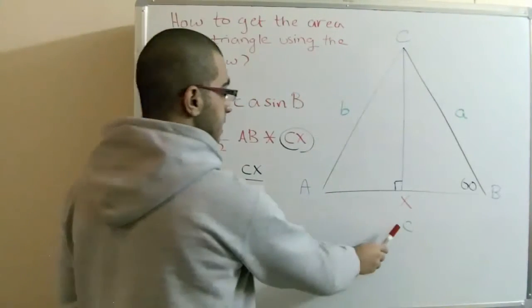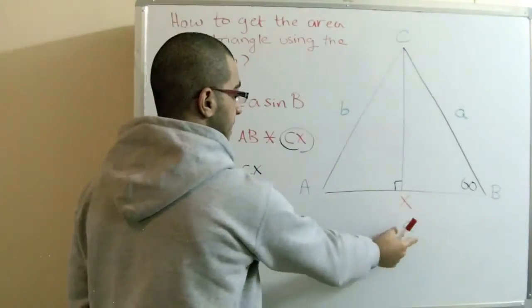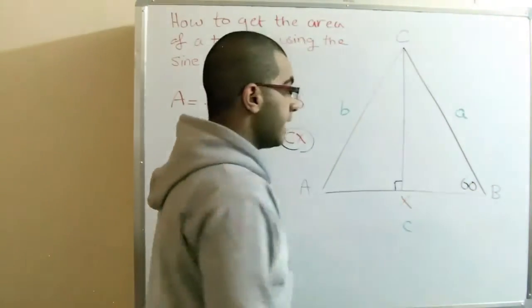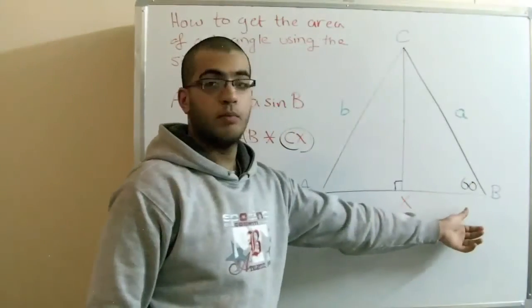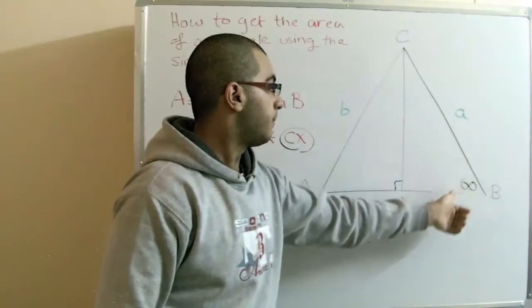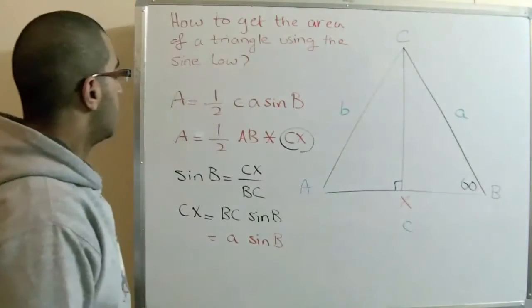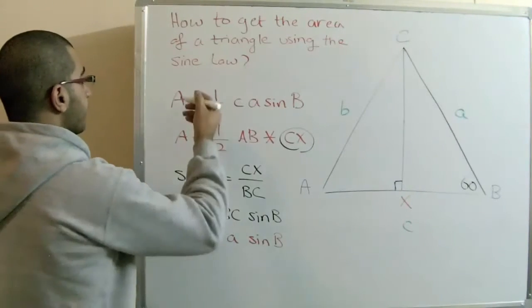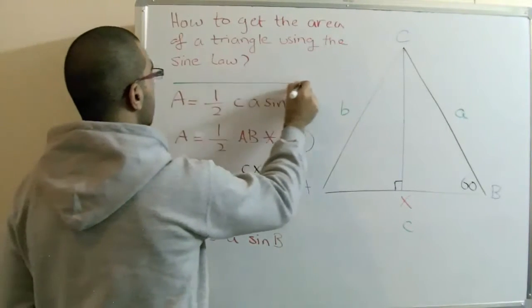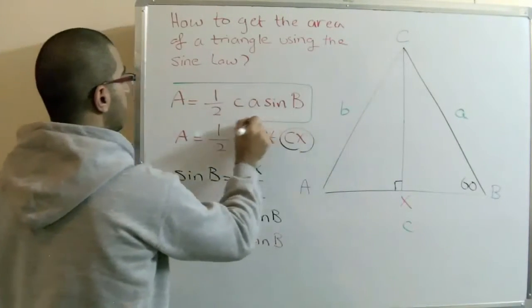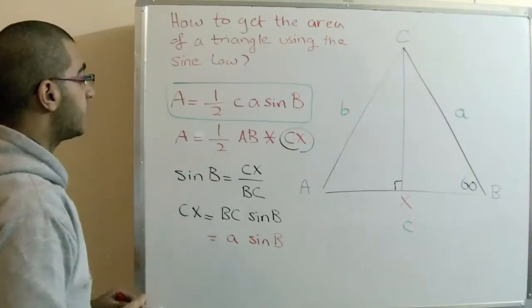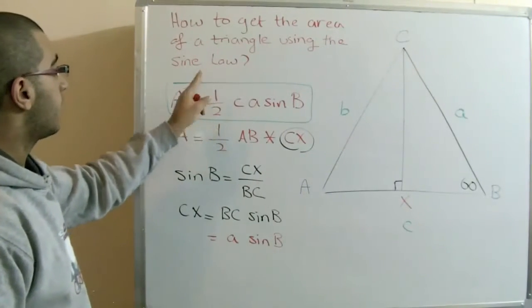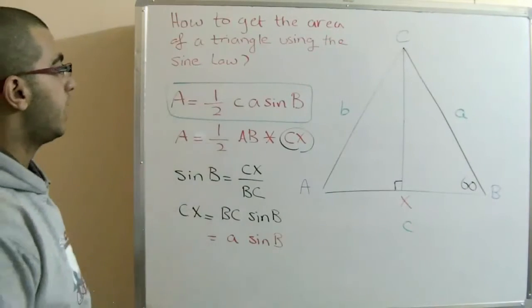This is the C side and this is the A side, and B is the angle found between both of them — it's in the middle. So this is the sine law formula we use to get the area of the triangle: Area = ½ · C · A · sine(B).